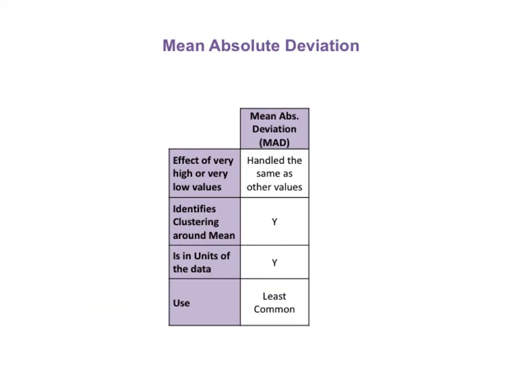In calculating the variance, why did we square each difference before summing them? Because if we didn't, we'd end up with zero every time. So why not use the absolute value instead of squaring? That way we would avoid the disproportionate effect of squaring very high and very low data values. And this is what the mean absolute deviation, the MAD, does. But the MAD is not used that much because squares are easier to manipulate in mathematical calculations than absolute values.